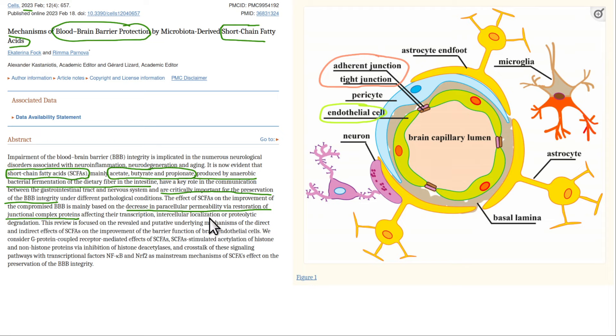So here they say bacterial fermentation, so bacterial conversion of dietary fibers in the intestine to the short-chain fatty acids, is critically important for the preservation of blood-brain barrier integrity. So that's an important point.